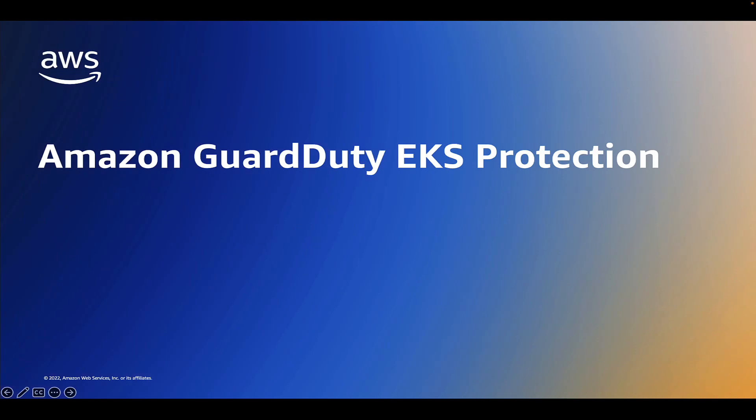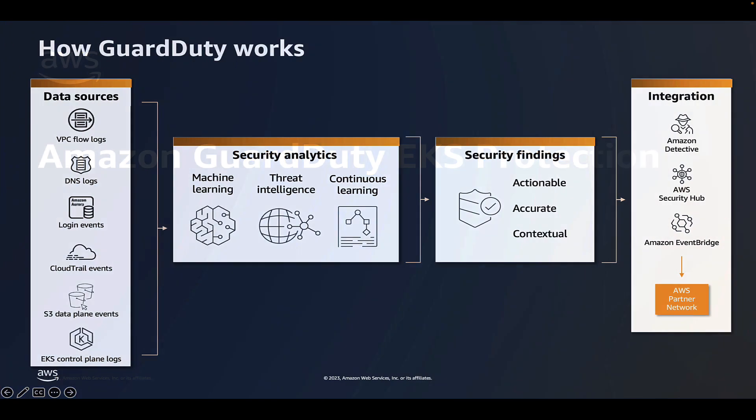Welcome. In this video I'm going to give an overview and demo of the Amazon GuardDuty EKS Protection feature. Amazon GuardDuty is a security monitoring service that analyzes and processes foundational data sources such as AWS CloudTrail management events, AWS CloudTrail event logs, VPC flow logs, and DNS logs.